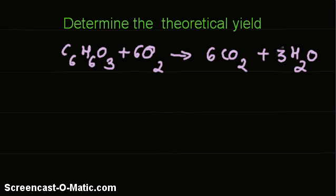This is the reaction. Since our focus is on this compound and this compound, we will focus only on those two entities. I'll write the stoichiometric ratio in this form. One mole of C6H6O3 produces three moles of water.